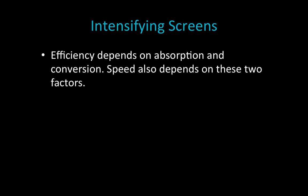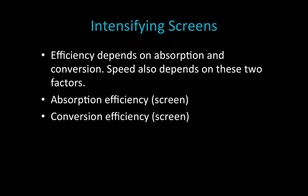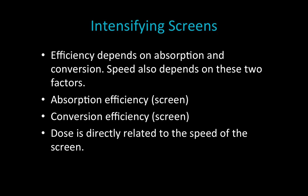The efficiency of an intensifying screen is described in terms of absorption and conversion efficiency. The speed also depends on these two factors, so a more efficient screen is also going to be a faster one. Every different screen will have a different number for both absorption efficiency and conversion efficiency. Our dose is also directly related to the speed and efficiency of the intensifying screen.